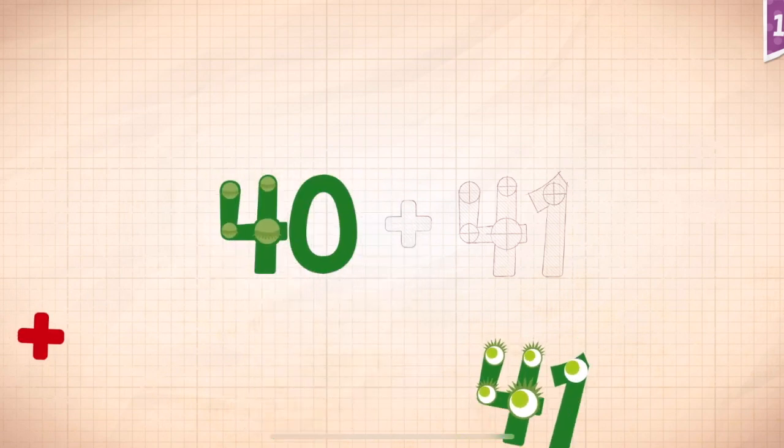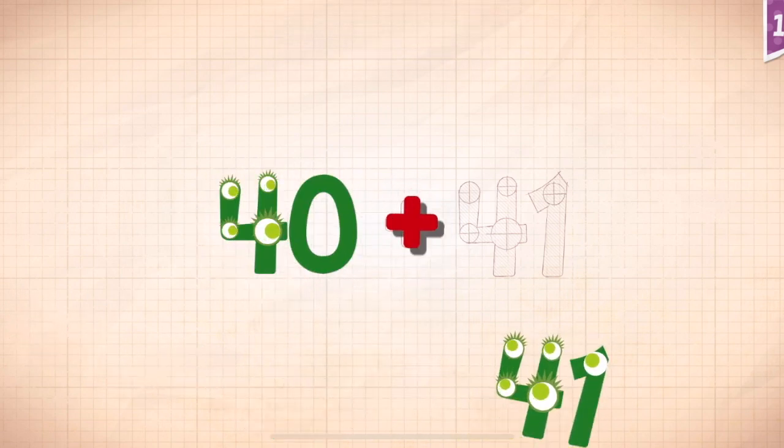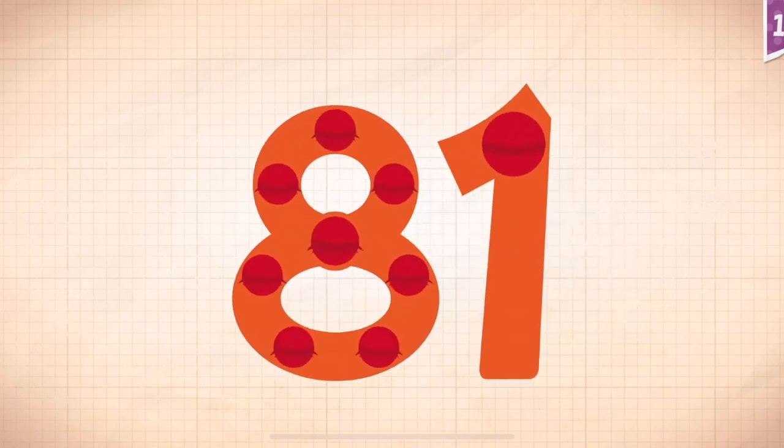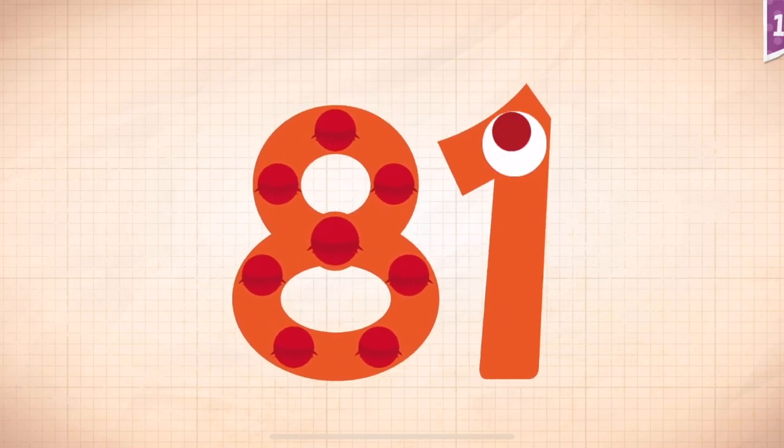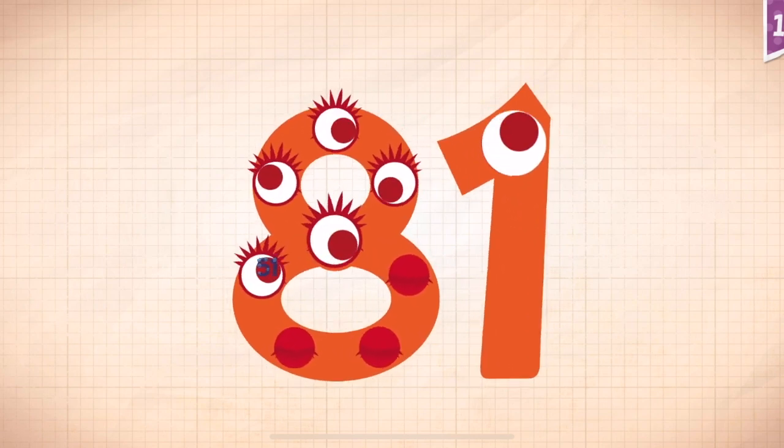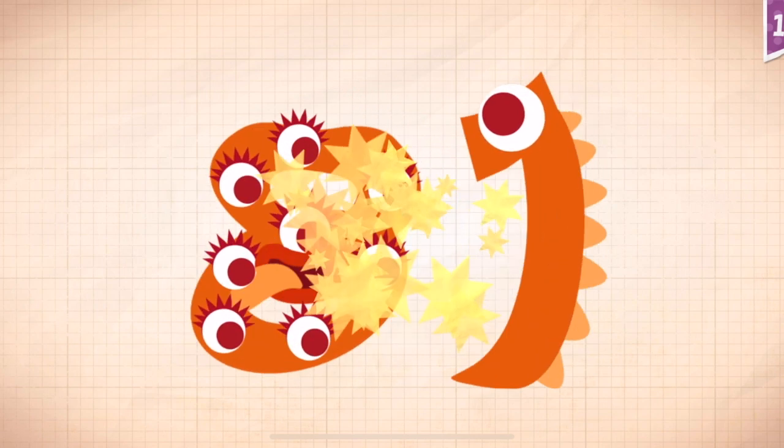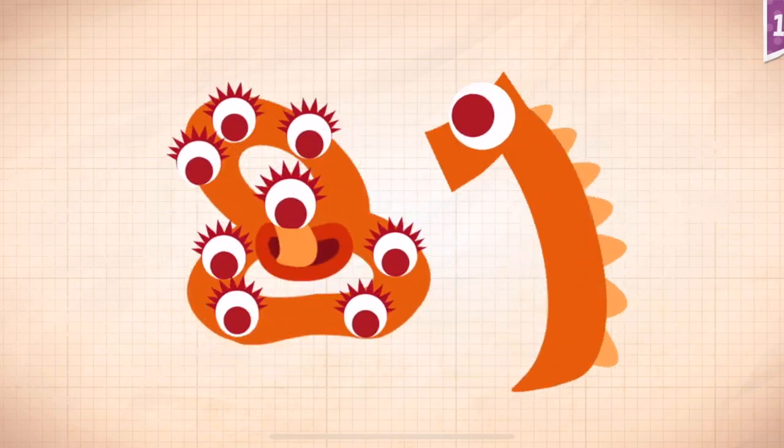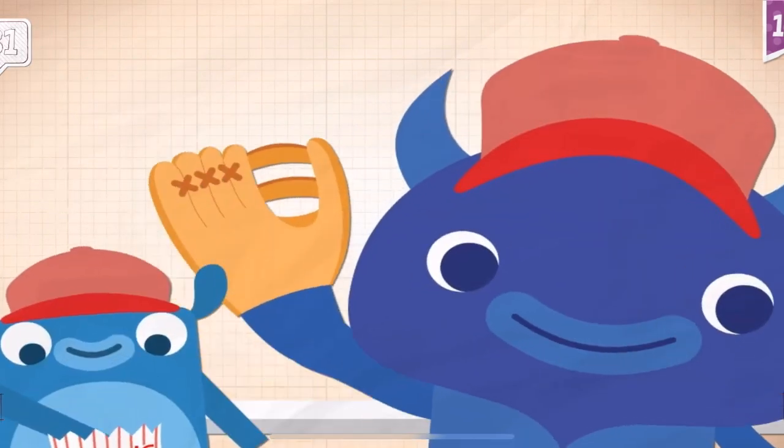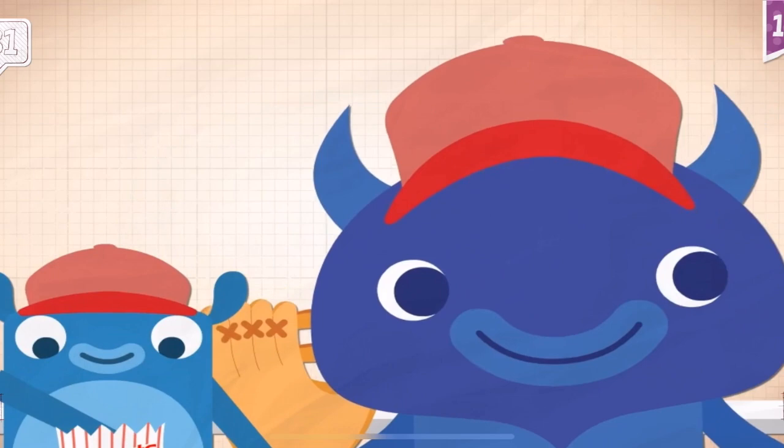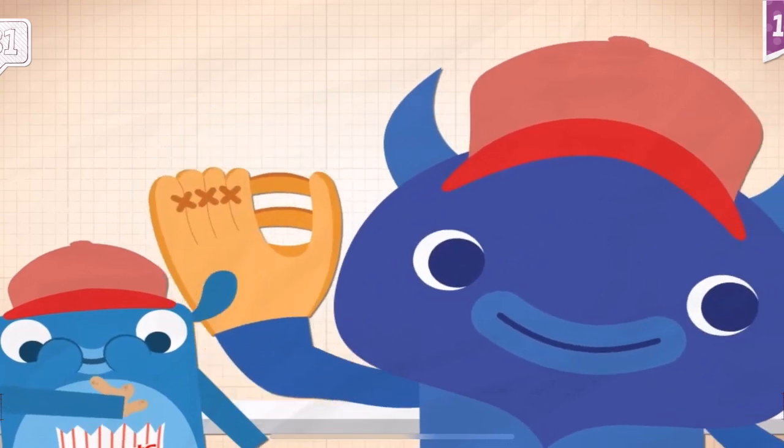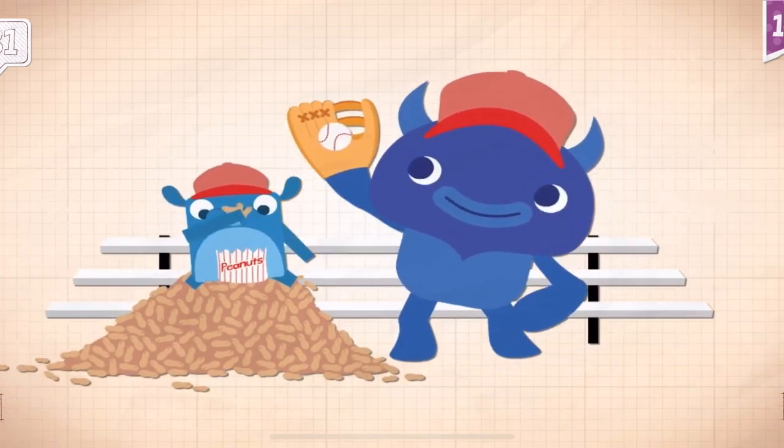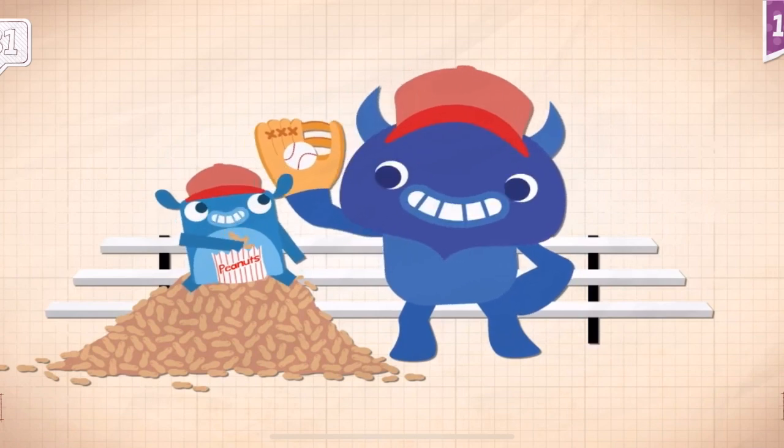Forty, forty, forty plus forty one, forty plus forty one equals eighty one. Touch the monster. 11, 21, 31, 41, 51, 61, 71, 81. Little Blue ate eighty one peanuts at the ball game.